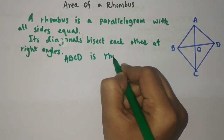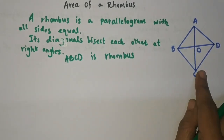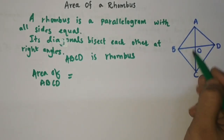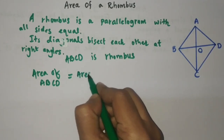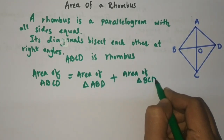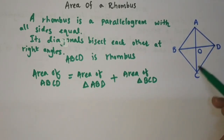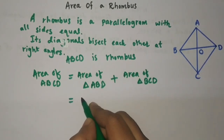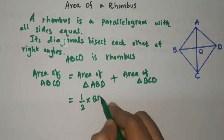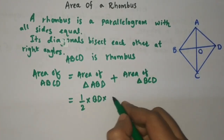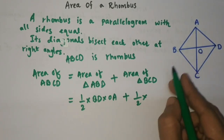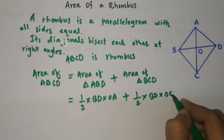So here ABCD is a rhombus. If we want to calculate its area, the area of ABCD equals the area of triangle ABD plus the area of triangle BCD. These two are congruent triangles. We know their area formula is ½ × base × height. For triangle ABD, the base is BD and the height is OA. For triangle BCD, the base is BD and the height is OC.